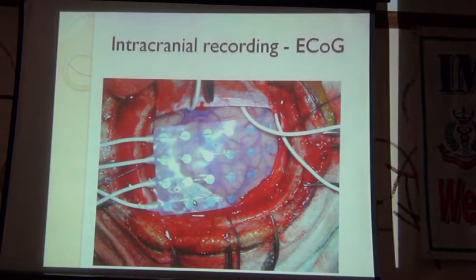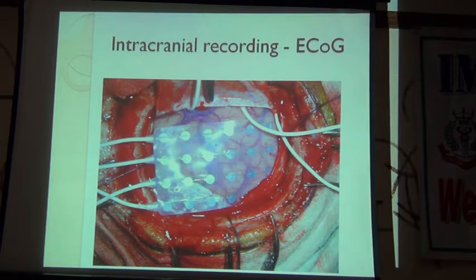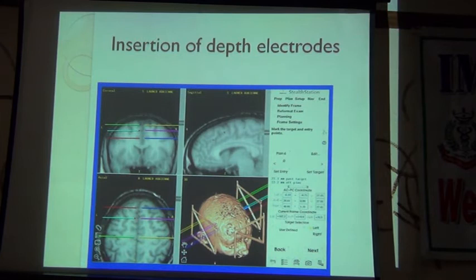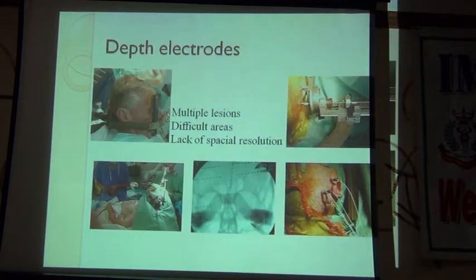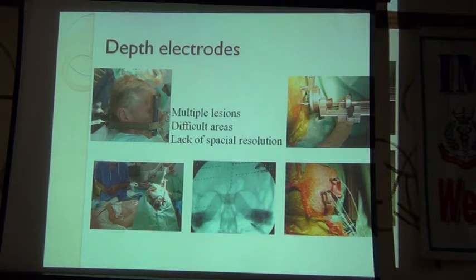Intracranial electrocorticography involves placing a large grid over the area thought to harbor the pathology. One week later, the grid is removed and the underlying tissue is resected. Depth electrodes — slender electrodes much like DBS electrodes — are placed into both sides to see whether the epileptic focus is deep down. This is very useful in mesial temporal sclerosis where the mesial temporal lobe is very close to the brain stem. The approach is lateral, coming out from close to the ear, and electrodes are placed using stereotactic techniques.